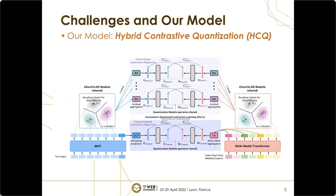For the coarse-grained representations, HCQ condenses each view into a global output. For the fine-grained representations, HCQ further learns a common space with local semantic structure via a ghost VLAD module. In this space, token embeddings of each view are softly assigned to a set of parameterized clusters, each of which stands for a latent topic or semantic concept. Learnable quantization is applied to the residual aggregations, producing fine-grained representations with complementary understanding.